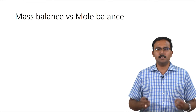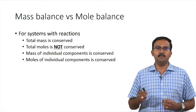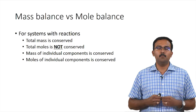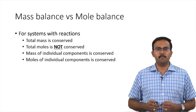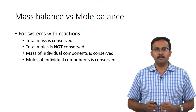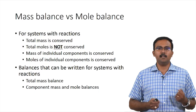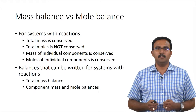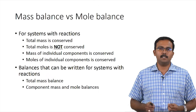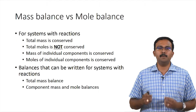However, for systems with reactions, total mass is conserved but total moles of the system are not conserved. In a reaction, only mass is conserved; the moles of reactants and products are not the same. However, mass and moles of individual components are conserved. So we can write the total mass balance and component mass and mole balances for reactive systems. When writing component balances, reactive components will have generation and consumption terms which must be accounted for.